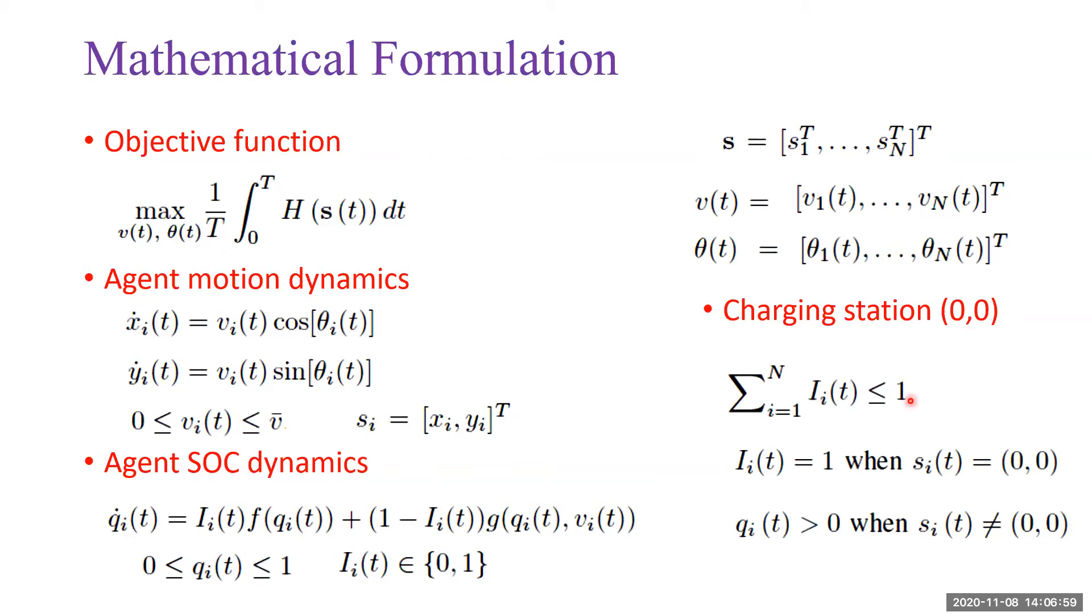We have three constraints. The first condition ensures that only one agent can be served at the charging station at any time. The second condition indicates that the agent is in in-charging mode when it arrives at the charging station. The third condition prevents the agent from running out of energy in the mission space.